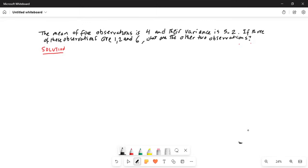The mean of five observations is 4 and the variance is 5.2. If three of these observations are 1, 2 and 6, what are the other two observations?